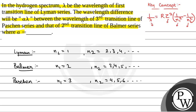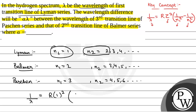For the first transition line of the Lyman series, N1 = 1 and N2 = 2. So 1/λ = R · 1² · (1/1² − 1/2²) = R · (1 − 1/4) = 3R/4. Therefore, λ = 4/(3R). Let us call this equation 1.